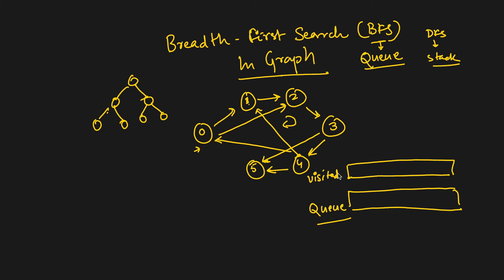The boolean array is the same size as the number of vertices — here we have six, so indices 0 through 5. Let's say we start from 0. We put node 0 into the queue and mark it as visited (true) in our visited array. Then we take out the element from the queue and print it as part of our BFS result.